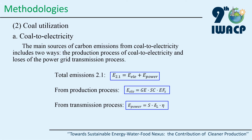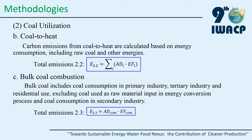Coal to electricity: the main sources of carbon emissions include the production process and the power grid transmission process. Coal to heat: it is calculated based on energy consumption, including coal consumption and other energies. It includes coal consumption in the primary industry, tertiary industry, and residential use, excluding coal use as material input in the energy transformation process and coal consumption in secondary industry.